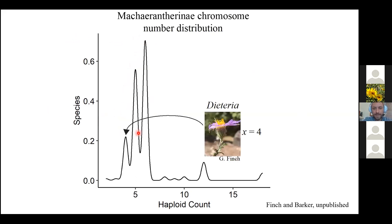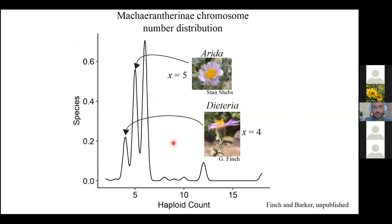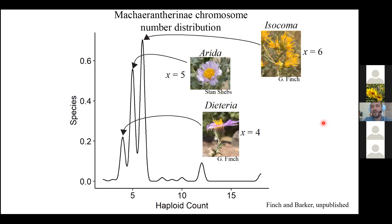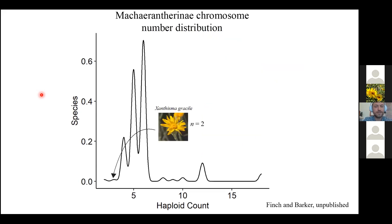There are three genera with base numbers of four, such as Dieteria; about five genera with base numbers of five, such as Erigeron; and around four genera with base numbers of six, such as Isocoma, which includes the largest genus in the group, Grindelia. There is also a species very special to me that has the lowest chromosome number documented in angiosperms—n=2—and that is Xanthisma gracile. Today I'm talking about chromosome number distribution in the subtribe as a whole and the drivers of that distribution.